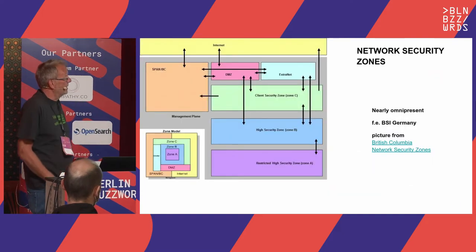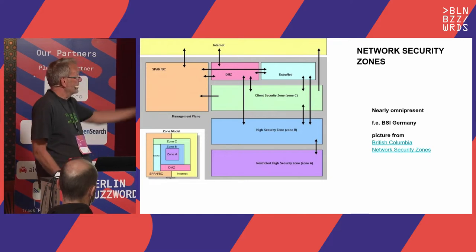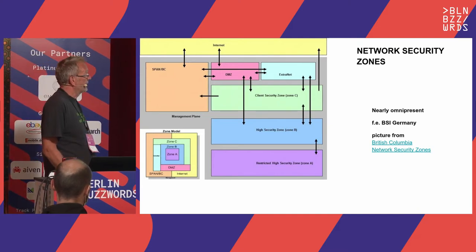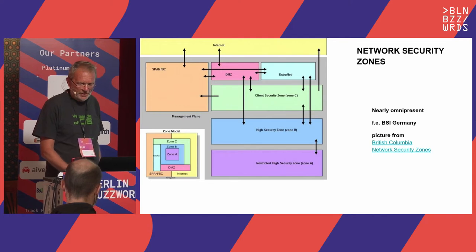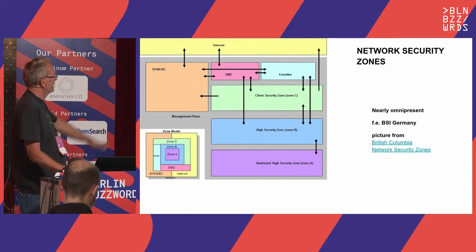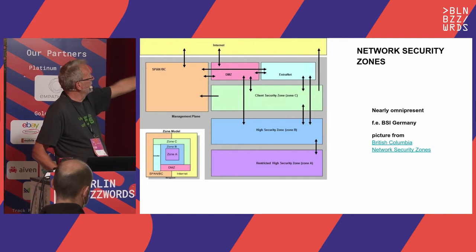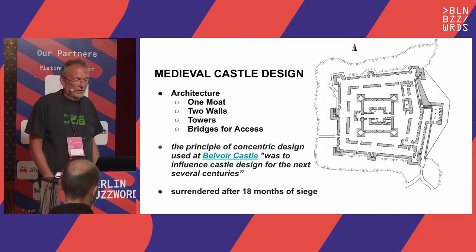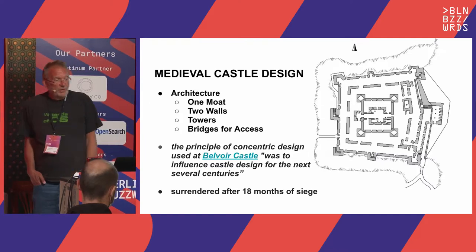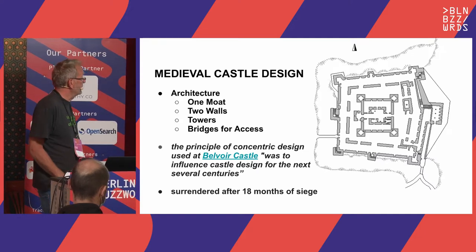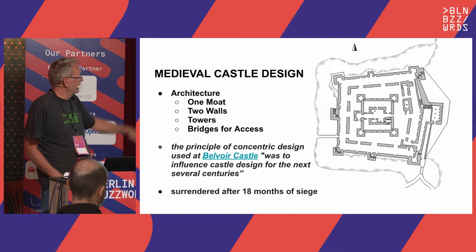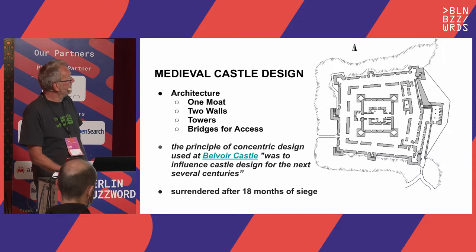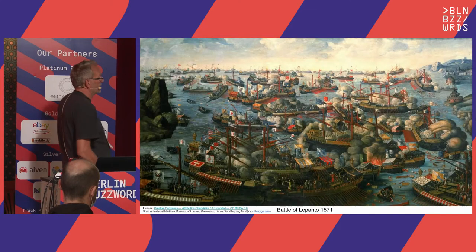Our security model is propagated by the German Federal Office of Information Security. Effectively, you have several zones — a very high security zone, a high security zone, clients, and so on. This is a kind of medieval castle design: you have one moat, two walls, towers, bridges for access. This is Belvoir Castle, which was the influential castle design for the next several centuries. This is our security model in information technology today.